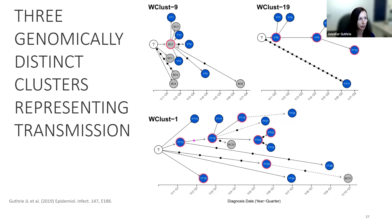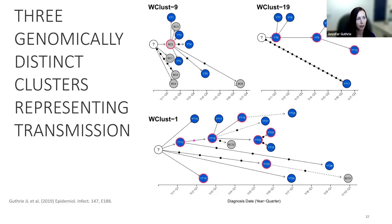Cluster 9 is quite interesting — we have a definite super-spreading individual. The red circle indicates they were highly infectious, with what we call cavitary smear-positive disease. They spread TB through a number of events to both Yukon and BC individuals. This person was sick in BC, came up to Yukon, and unfortunately we see many cases arising soon after, and some appearing even years later.